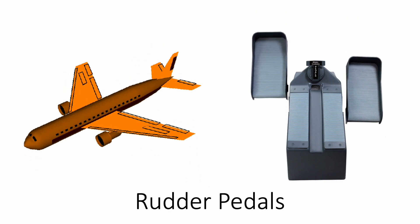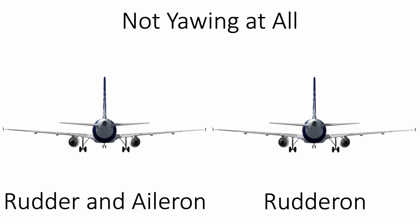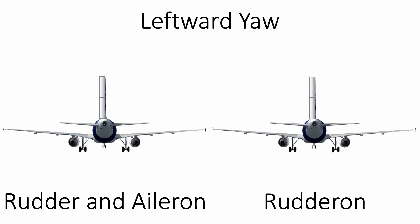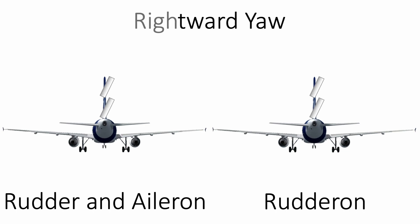The rudders are responsible for making sharp turns in the air by yawing leftward or rightward. This vertical stabilizer component is highly sensitive. Like conventional rudders, the rudderons yaw towards the horizontal direction the airplane wants to head for. Both of them simultaneously turn left or right.